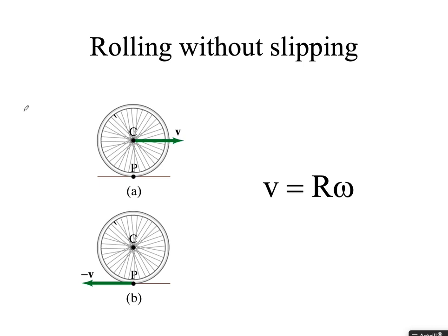Rolling without slipping — what's going on? If you look at point P where the wheel contacts the ground, the center of the wheel moves at some velocity v. From the wheel's reference frame, point P moves backward at that speed. From the center C, the top of the wheel is seen moving at v, so the top is moving at 2v relative to the ground. Depending on your perspective, parts of the wheel are moving at different speeds.